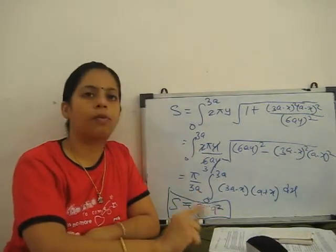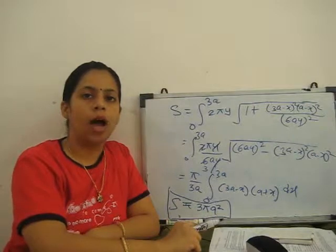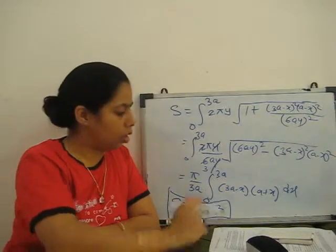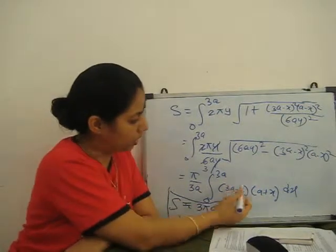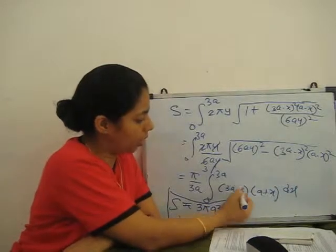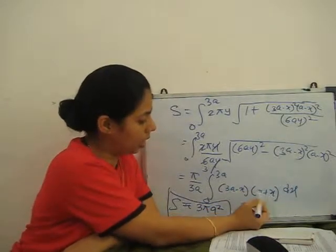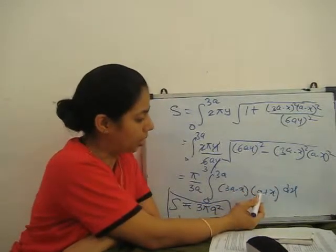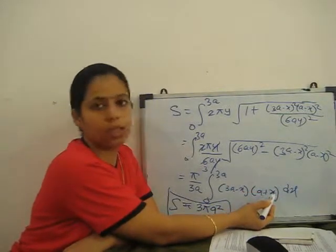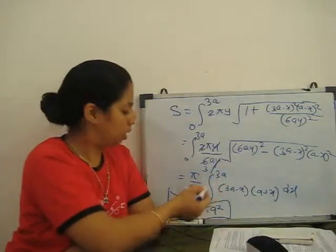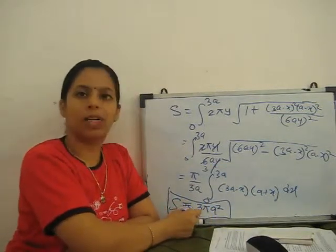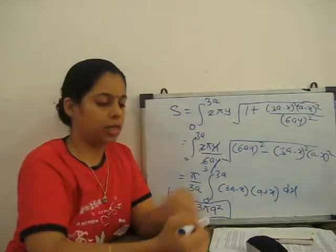For the surface area of revolution about a particular coordinate, you just multiply it. This term gives 3a² and 3ax, then minus ax, then x². Just integrate and apply the limit 0 to 3a, and you will get this result.